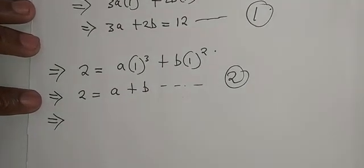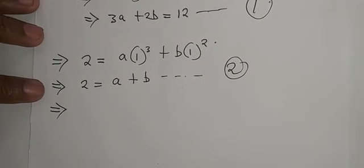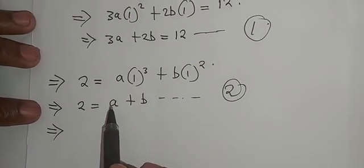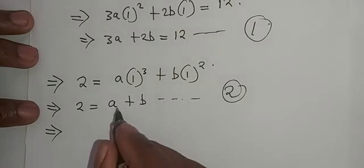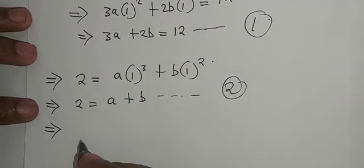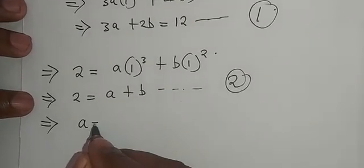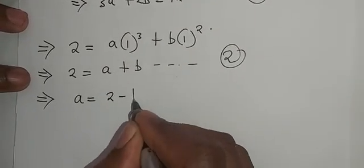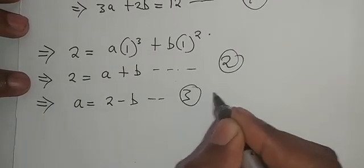Which in this case implies that if we can make a the subject, it means it will be 2 minus b. Therefore we are saying a equals 2 minus b. That is equation number 3.